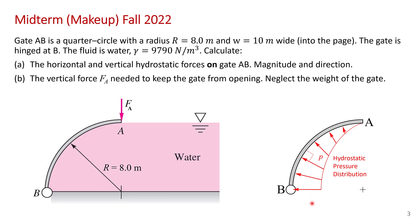Before getting into the detailed solution, I just wanted to say a few words about the general physics. I've drawn here the pressure distribution on the gate — this is the force of the water on the gate. The hydrostatic pressure increases linearly with depth and is always perpendicular to the surface, so each of these pressure vectors are upward and to the left. It should be completely obvious that the horizontal force is going to be to the left, and the vertical force is going to be upwards — and that needs to be part of our final answer.